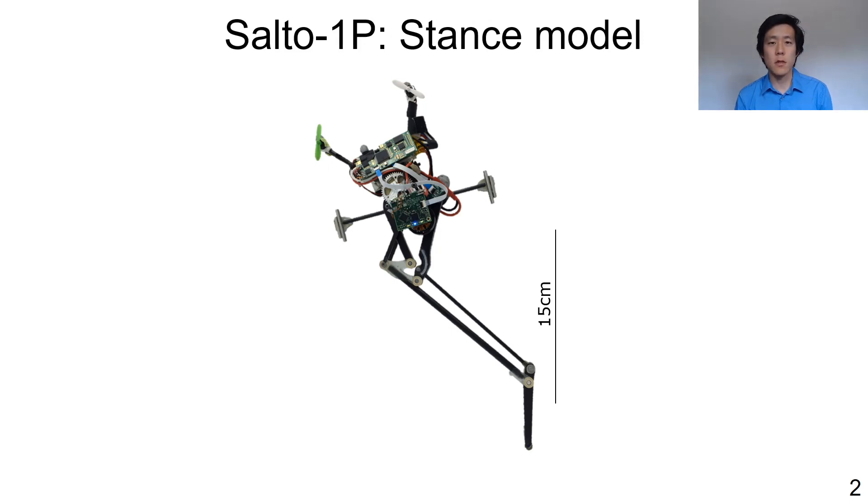Salto 1P consists mainly of three rigid bodies. The chassis carries the main mass of the robot, the processors, and the batteries. The reaction wheel tail controls the pitch angle of the robot, or its orientation in the sagittal plane. The leg motor controls the extension or retraction of the foot, which on the leg linkage is constrained to move in a straight line that is coincident with the robot's center of gravity.